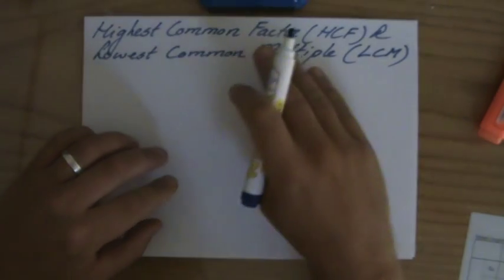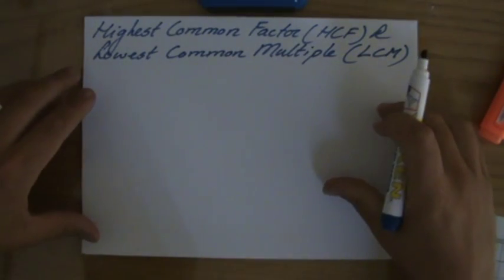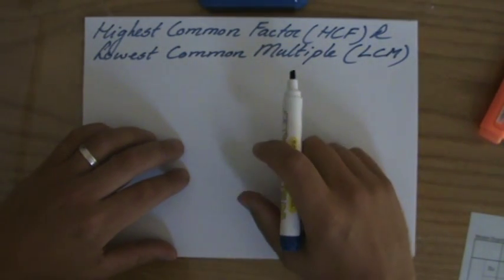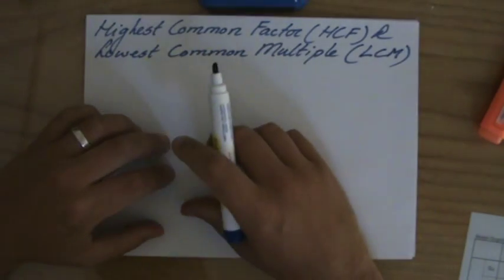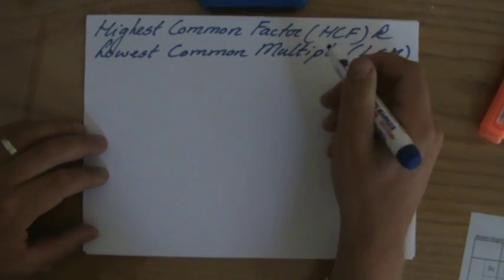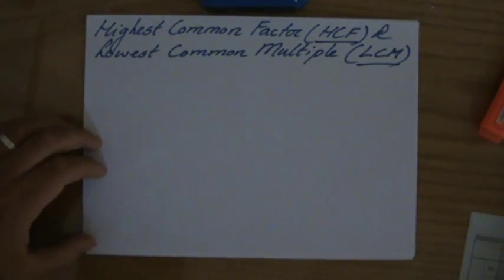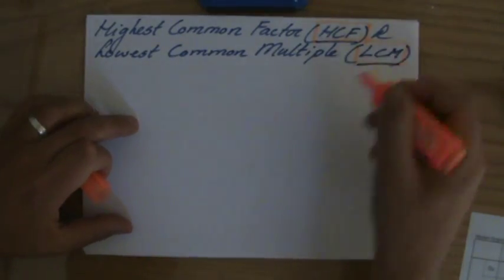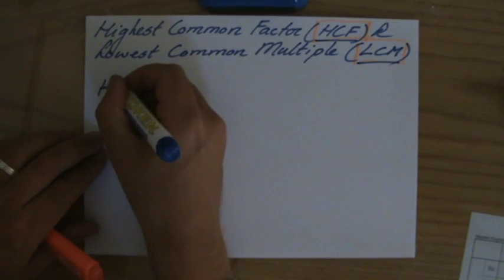I'd like to talk about the highest common factor and the lowest common multiple, because those are two terms that will frequently return in all sorts of questions. As you can see, they're quite big words, so we usually talk about the HCF — the highest common factor — and the LCM — the lowest common multiple. You rarely see them written out in full.